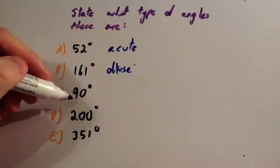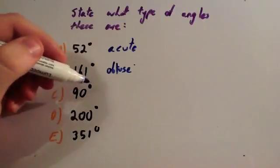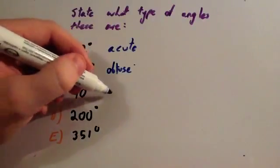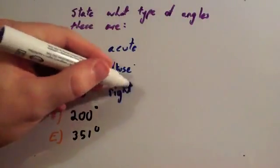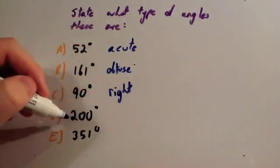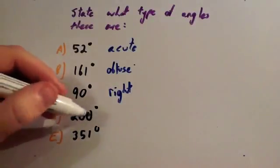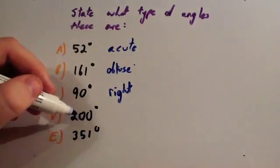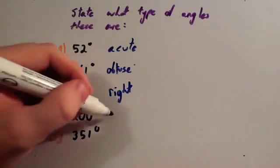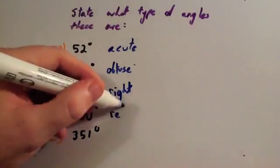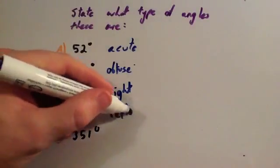90 degrees — well, 90 degrees is the special one, that is a right angle. 200 degrees — well, 200 degrees is bigger than 180 but less than 360, so that is a reflex angle.